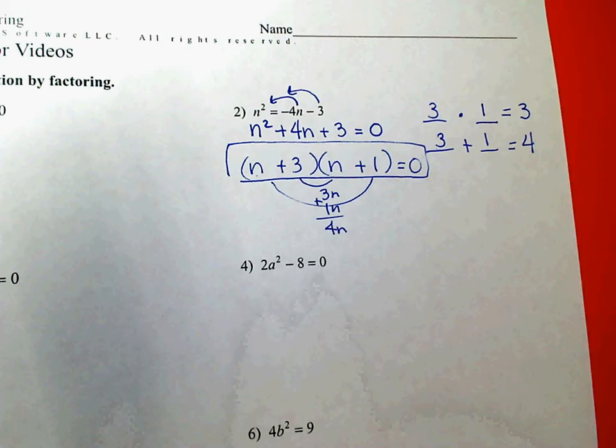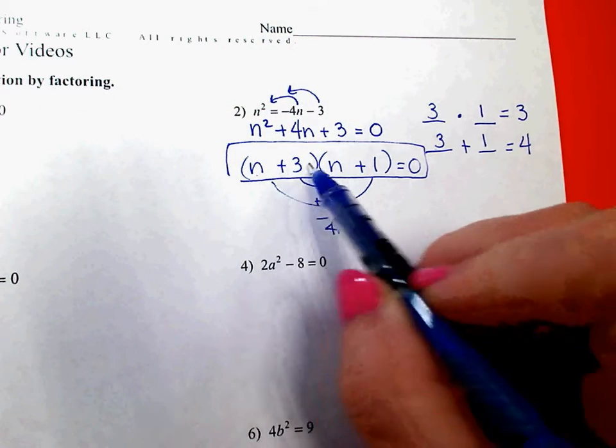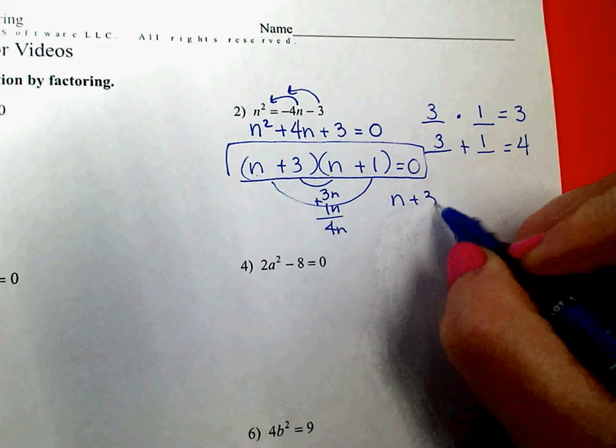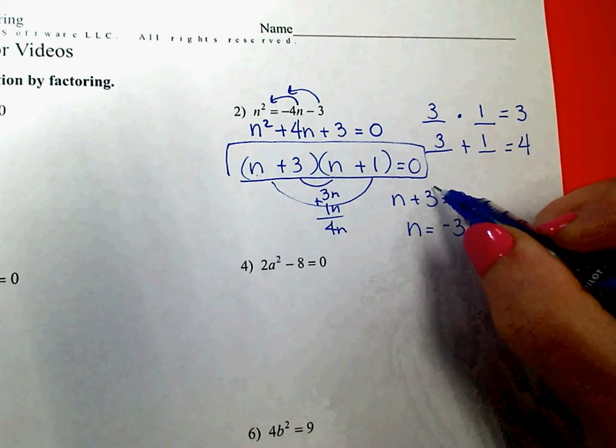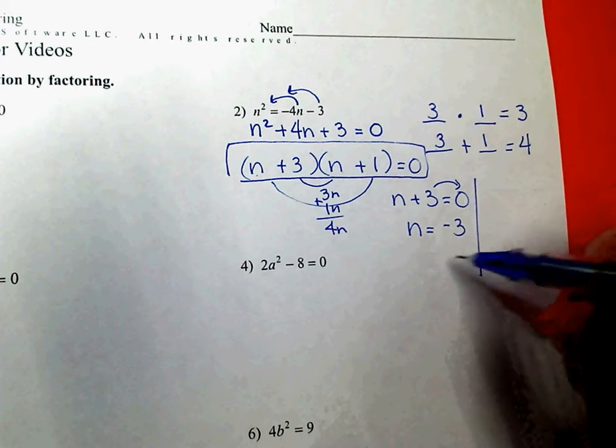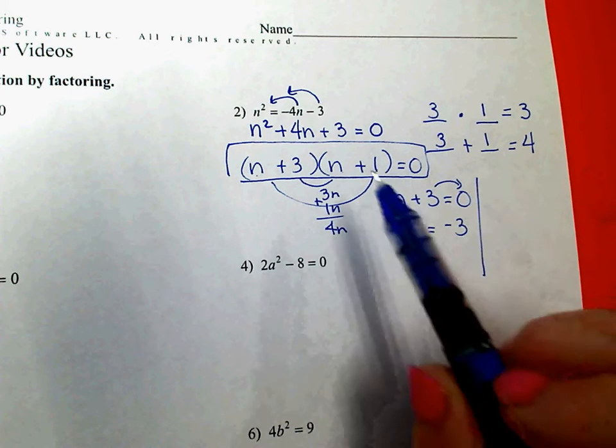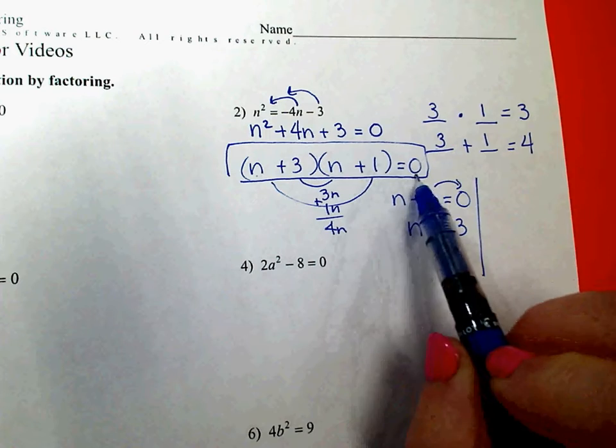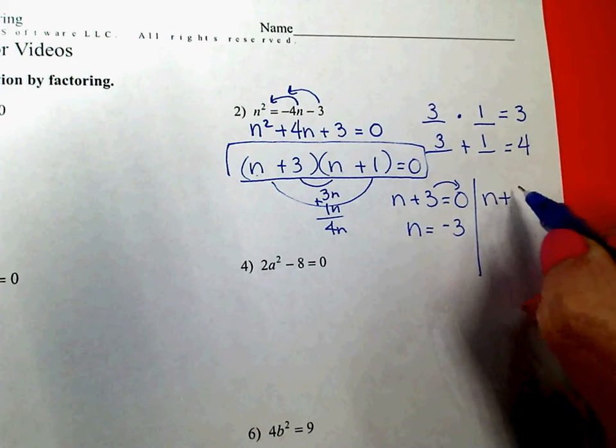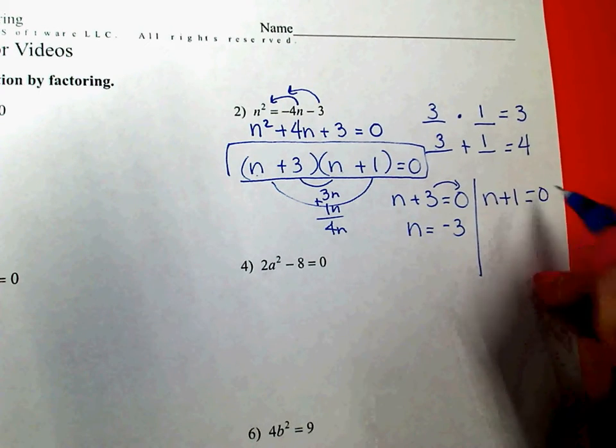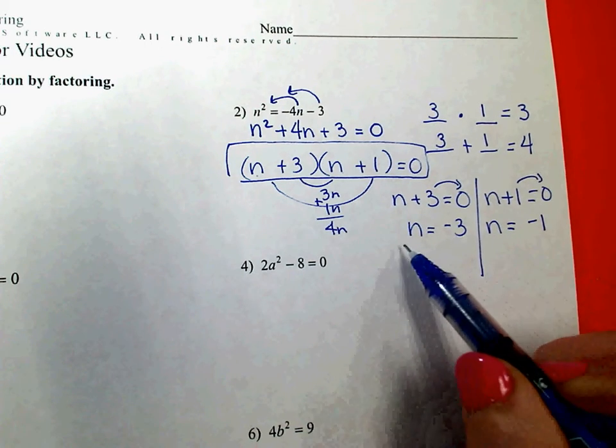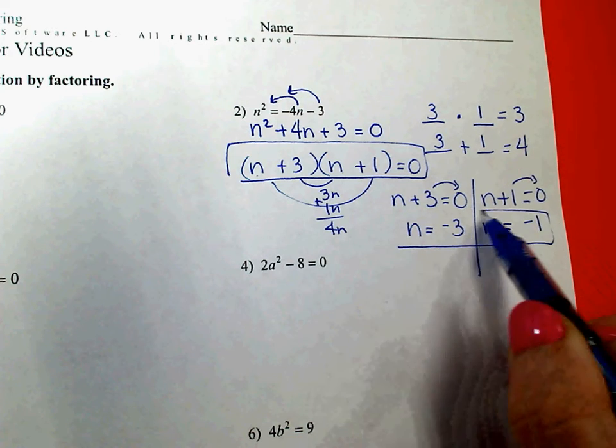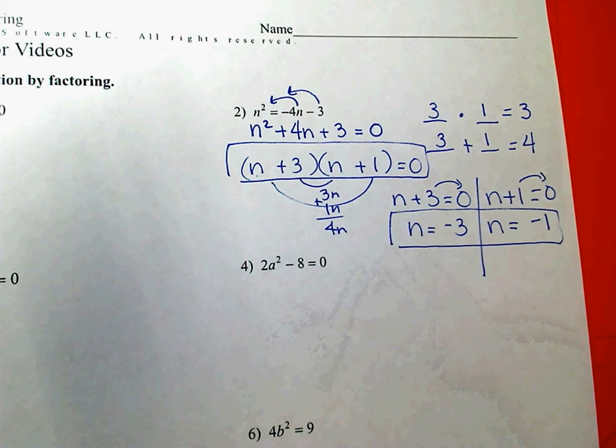So my first choice, n plus 3 equals 0, means that n would have to be negative 3 if you bumped that over to get the n by itself. There's one answer. Second answer, if n plus 1 equals 0, and I solve this one for n, then n would be negative 1. So here are my two possible answers for n. n could be negative 3, or n could be negative 1.